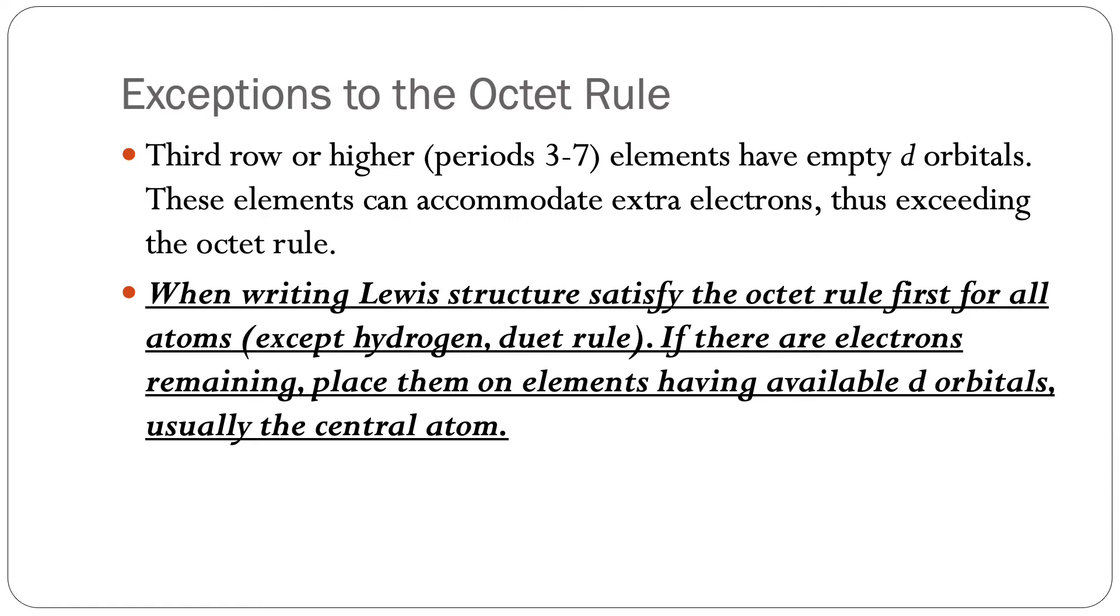When writing Lewis structures, satisfy the octet rule first for all the atoms, except hydrogen of course. If there are extra electrons remaining, place them on elements having available d orbitals, usually the central atom.